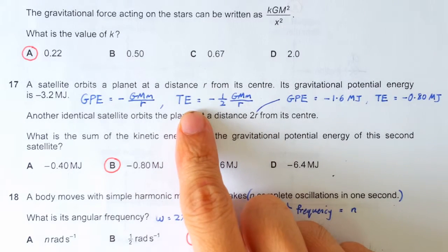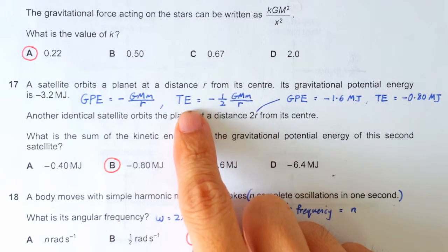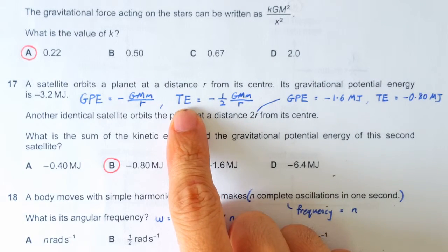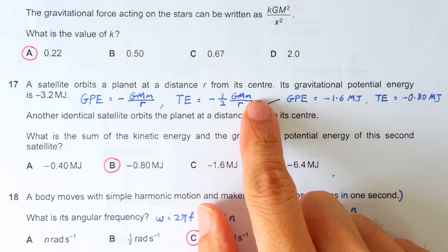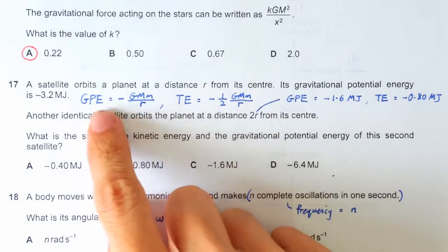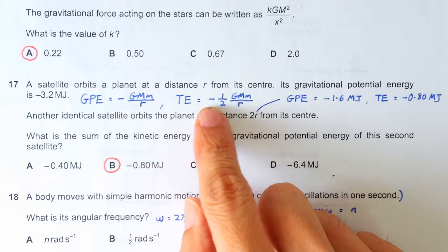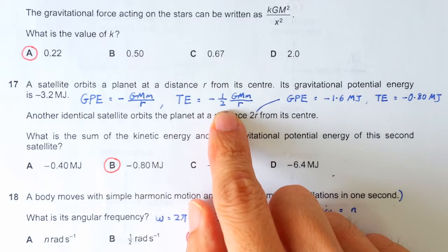To do this question, you'll be at a huge advantage if you remember the formula: total energy of an orbiting satellite is negative half GMm over R. GPE is of course negative GMm over R, so the total energy is actually half of your GPE.